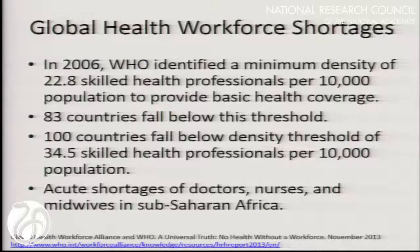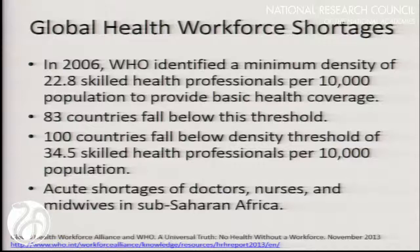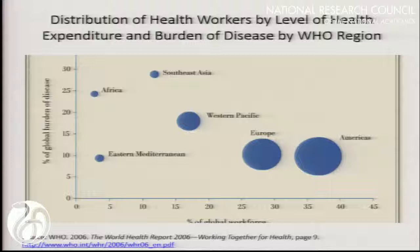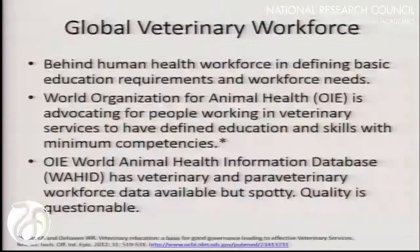One of the challenges of implementing a global health workforce is that we're already experiencing shortages. In 2006, the World Health Organization identified a minimum density of 22.8 skilled health professionals per 10,000 population to deliver basic health coverage, but found that 83 countries have fallen below this threshold, and 100 countries fell below the threshold of 34.5 health professionals per 10,000 population. In Sub-Saharan Africa, there are acute shortages of doctors, nurses, and midwives, with a better distribution in the Americas and Europe compared to Africa and Southeast Asia, which desperately need health workers.